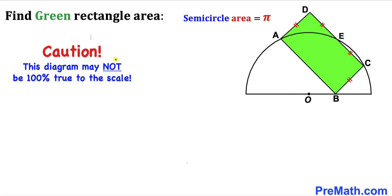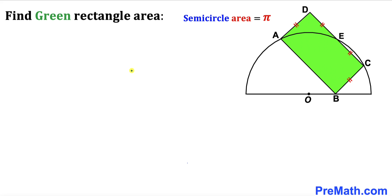Please keep in mind that this figure may not be 100% true to scale. Since the area of this semicircle is pi, we are going to calculate the radius of this semicircle.